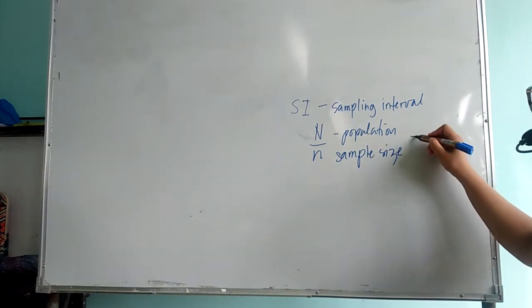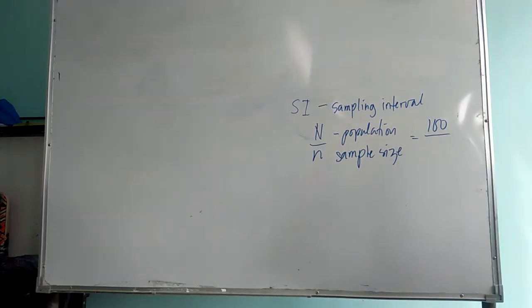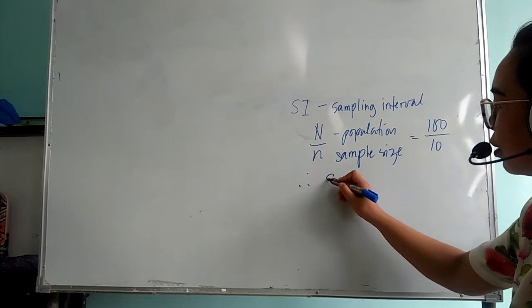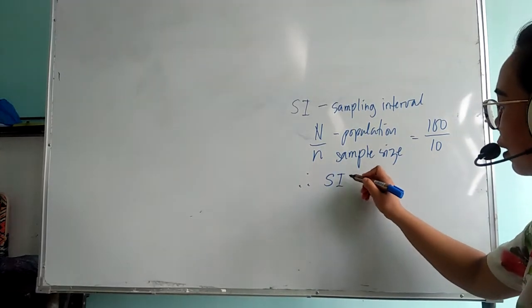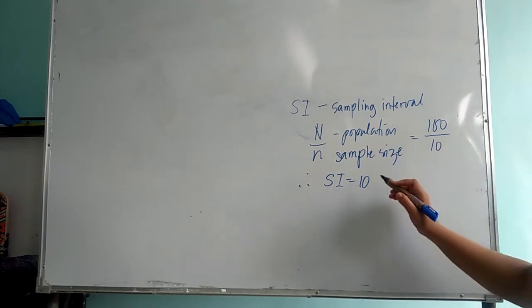Example: your population is 100 and your desired sample size is 10. Therefore, your sampling interval will be 10. 100 divided by 10 is 10.